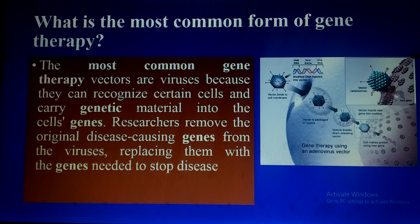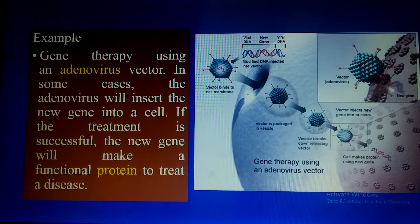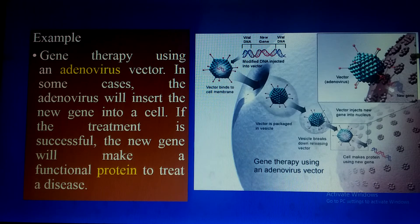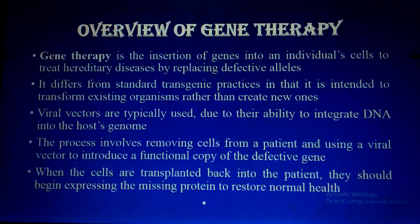The most common gene therapy vectors are viruses, because they can recognize certain cells and carry genetic material into them. Researchers remove the original disease-causing genes from the viruses, replacing them with the gene needed to stop diseases. As you can see here, an adenovirus is used to insert the gene, which then produces its functional protein — or possibly hormones — required by the human body.